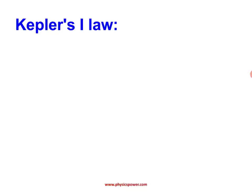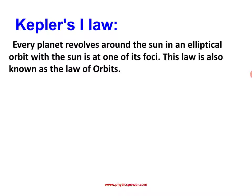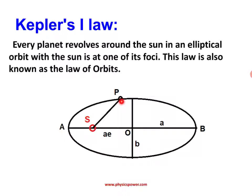According to Kepler's first law, every planet is in an elliptical orbit, with the sun at one of the two foci. In the diagram, the elliptical orbit has a major axis and a minor axis. Half of the major axis is denoted by small 'a' — this is the semi-major axis. Half of the minor axis is denoted by small 'b'. Capital A and capital B indicate the perihelion and aphelion points.